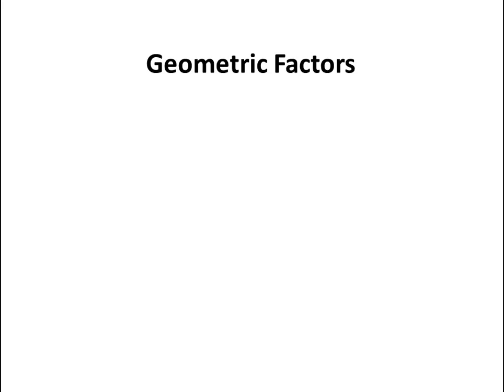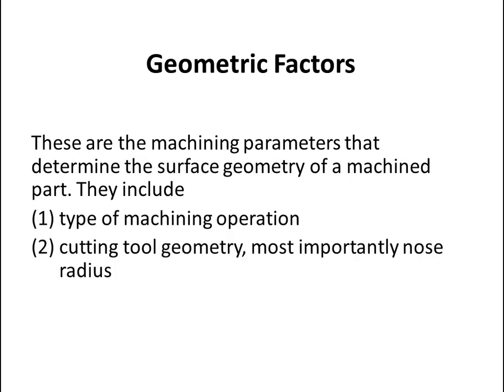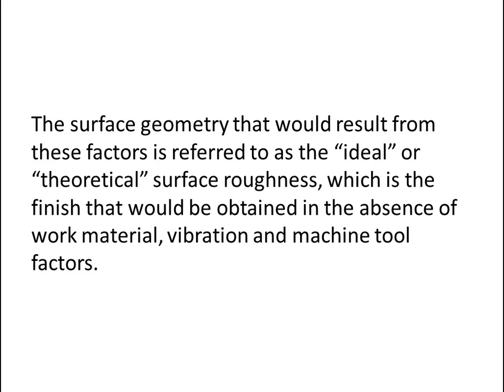Let's talk about geometric factors. These are the machining parameters that determine the surface geometry of a machined part. They include type of machining operation, cutting tool geometry — most importantly nose radius — and feed. The surface geometry that results from these factors is referred to as the ideal or theoretical surface roughness, which is the finish that could be obtained in the absence of work material, vibration, and machine tool factors.